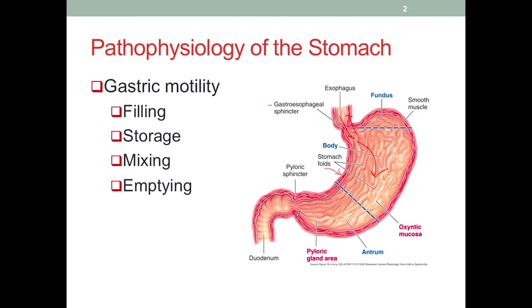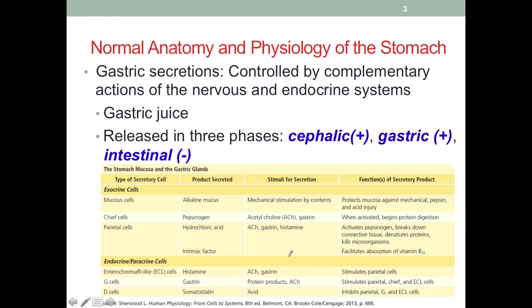The food will eventually pass through the pyloric sphincter into the duodenum bit by bit. The stomach has a lot of active secretions into the food that it processes. For example, in the gastric juice, we have hydrochloric acid, which makes the pH in the stomach very low — it can be as low as 2, so this is very acidic.